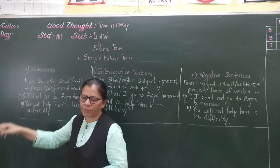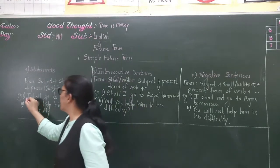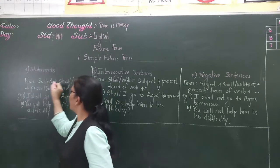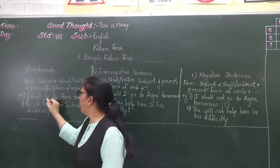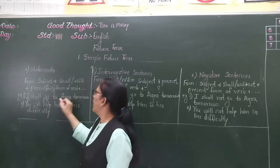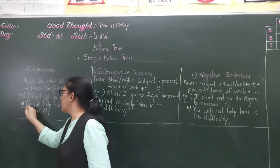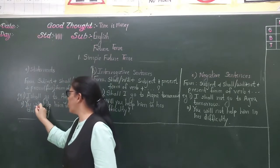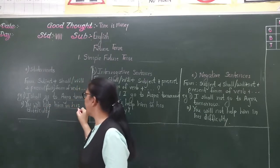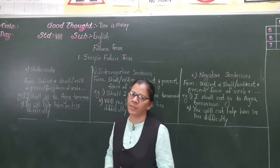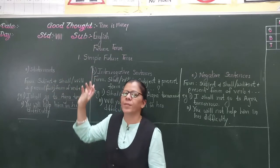In the first example, 'I' is the subject, plus 'shall' indicates future, plus 'go' is the first form of the verb, and 'to Agra tomorrow' is the remaining part of the sentence. In the second example, 'you' is the subject, plus 'will help' is the verb in the first form, and 'in his difficulty' is the remaining part of the sentence. That is the form of statements in simple future tense.